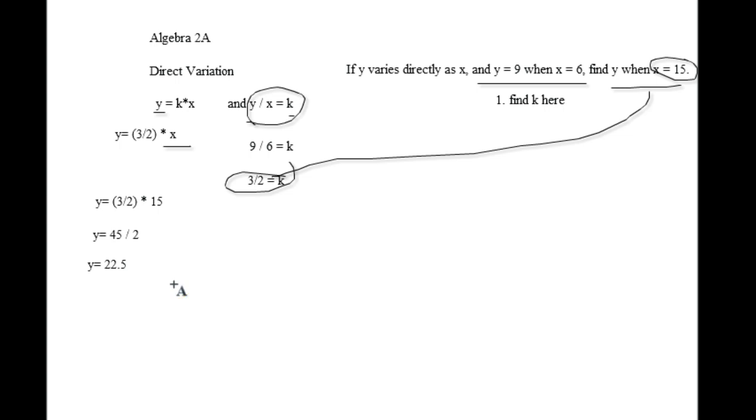All right, so that's how a direct variation problem works. Direct variations also have constant variation. So if you were looking at a table of values, it would be going up or down constant values-wise.